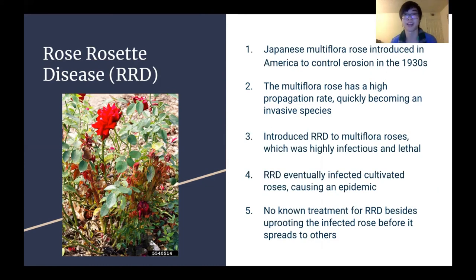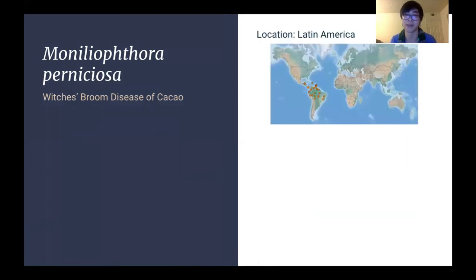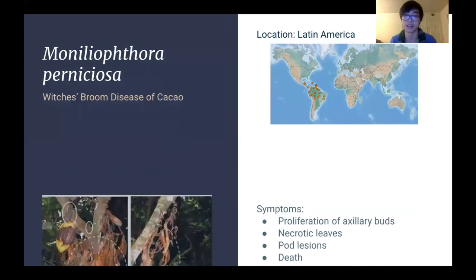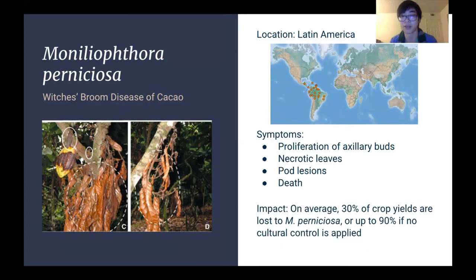And lastly, we'll be talking about Moniliophthora perniciosa, otherwise known as the witch's broom disease of cacao. This is a type of fungus found within Latin America, as you can see on the map. Symptoms of this fungal disease include proliferation of axillary buds forming a witch's broom, necrotic leaves, as you can see in the image, pod lesions which will kill the seeds inside, and eventually death. On average, 50% of crop yields are lost to this fungal disease, and if no cultural control is applied, about 90% of the crop yields will be lost. Essentially, that means about 50% of chocolate will never be produced at all.